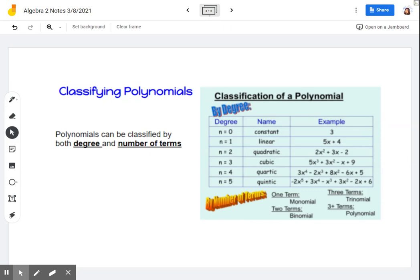Some of these terms you may have heard before, some of them might be brand new to you. If we're talking about degrees, any sort of a constant, anything that's just a number with no variables, any constant term has a degree of zero.